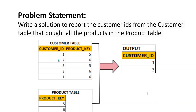Looking at customer ID two, he bought only product six — he didn't purchase product five, which means we should not consider this customer for our report. The third customer also bought both products five and six, so we should consider this customer as well. Basically, we need to find the list of customers who bought all the products from the product table. This is the problem statement.